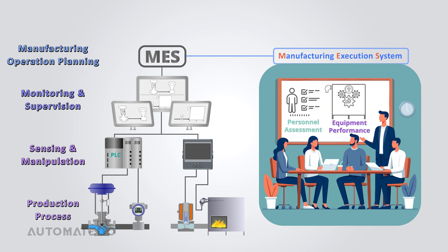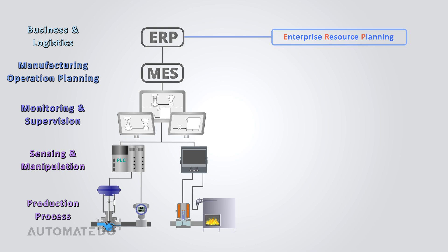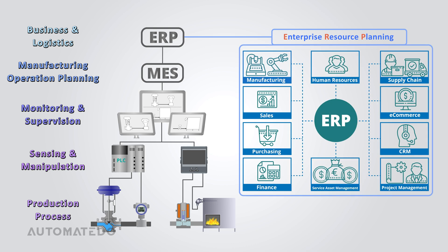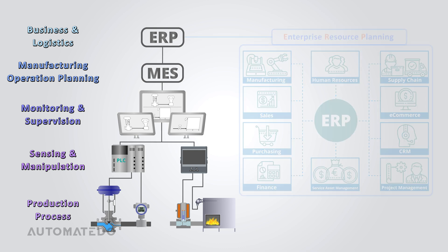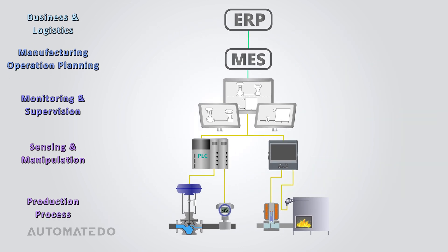The MES provides manufacturers with tools to analyze how equipment and personnel are utilized, monitor performance, and improve efficiency by reducing waste. At the apex of the automation pyramid lies the business and logistics level, where the ERP, or Enterprise Resource Planning system, is employed. An ERP system is a collection of interconnected software applications offering a unified, overarching view of all business processes — including manufacturing, sales and marketing, purchasing, finance and accounting, human resources, supply chain, e-commerce, customer relationship management, project management, and service asset management.